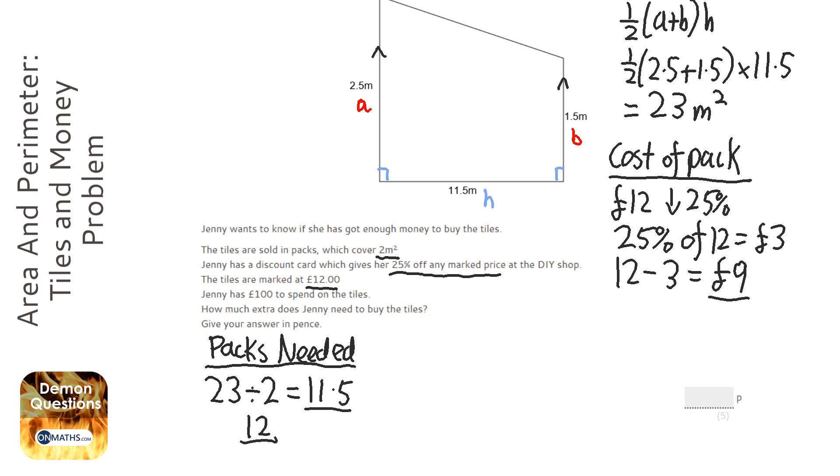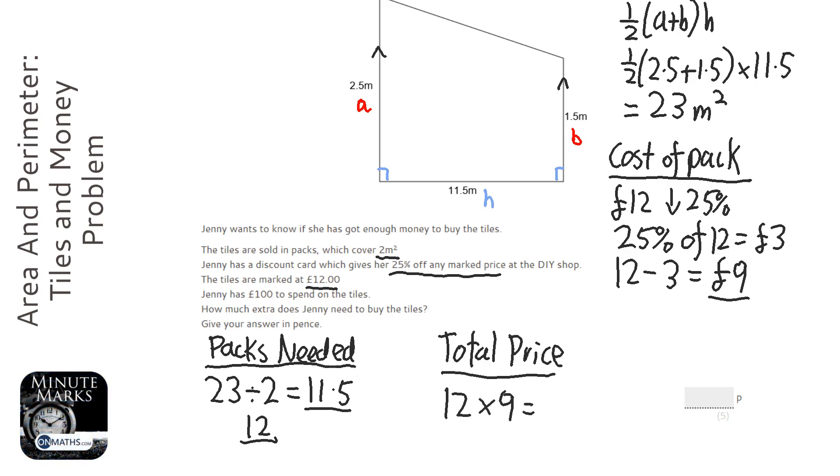So the answer is going to be 12. So I need 12 packs. So total price. So I need 12 packs. And each of them costs £9. So 12 times 9 is £108. So it's going to cost £108.